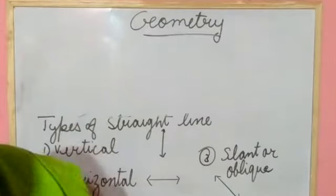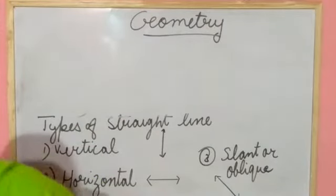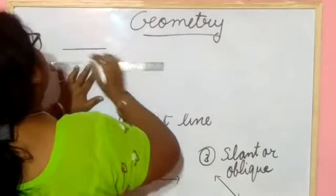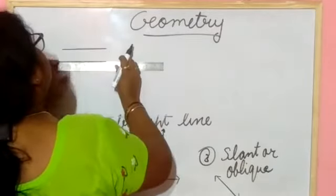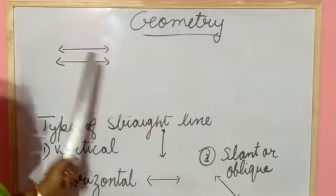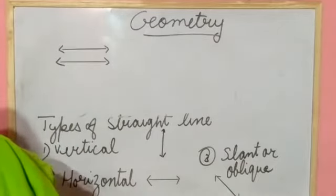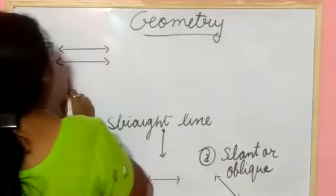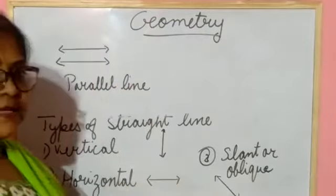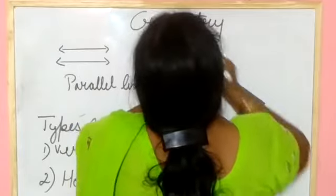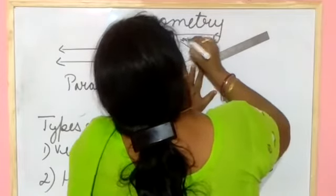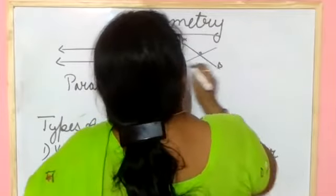Here you are seeing one line, and similarly one more line is here. If we extend these lines on both sides, they will remain the same — they will not touch each other. This type of line is known as a parallel line.